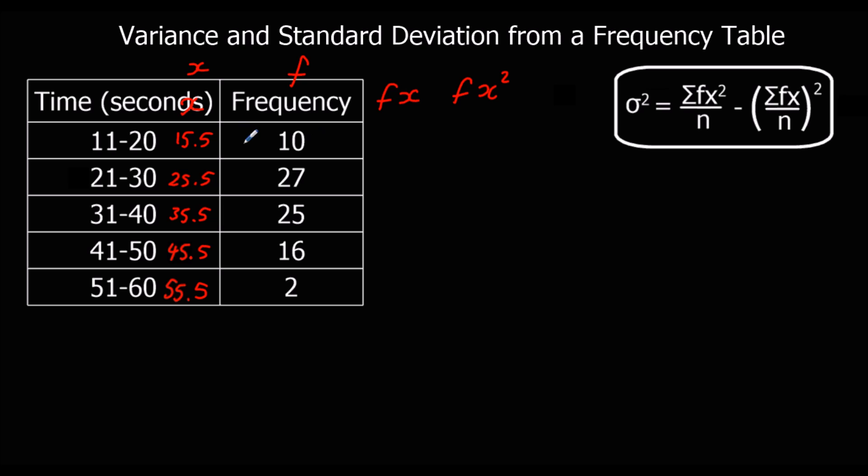So we need to work out fx and fx squared. We're going to use a calculator. So fx is just going to be f times x. So 15.5 times 10 is 155. And then we're going to use the calculator to work out 25.5 times 27, 35.5 times 25, 45.5 times 16, and 55.5 times 2.